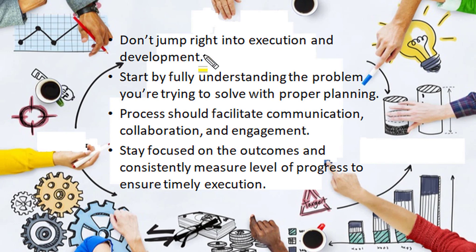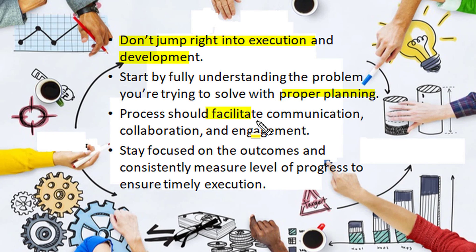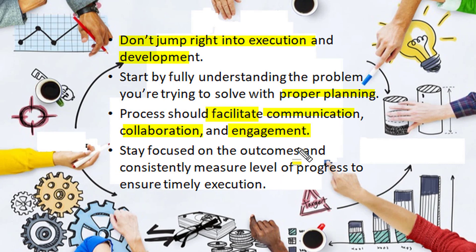To summarize the key points in the project lifecycle: don't jump right into execution or development activity, as planning is more important for successful execution. After initiation, one must understand the problem carefully and try to solve it with proper planning in the initial phase only. Project management must facilitate very good communication among team members so that proper collaboration is obtained and the project can be successfully completed within specified time and budget as per scope. During project execution, stay focused on the outcomes and consistently monitor and measure the level of progress to ensure timely execution within budgetary norms as per the specified scope.